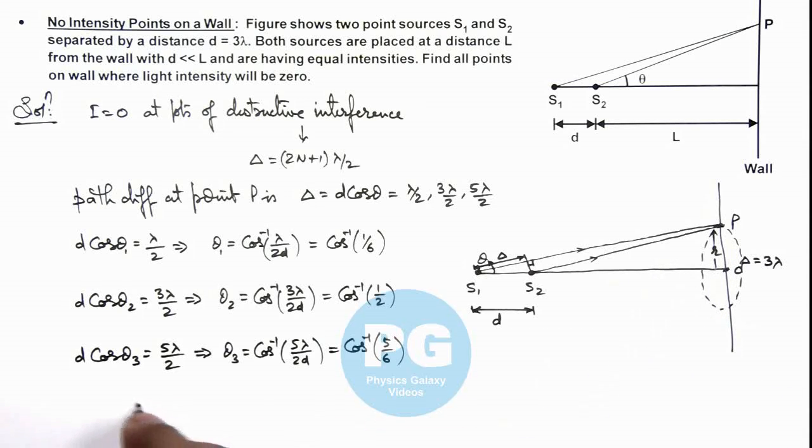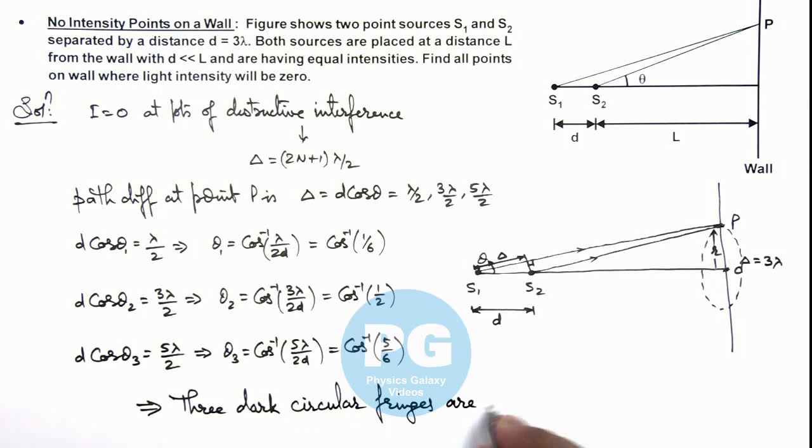Here we can write 3 dark circular fringes are obtained on screen, which is actually wall in this case. That is the result of this problem.